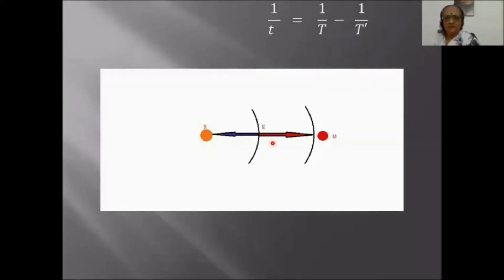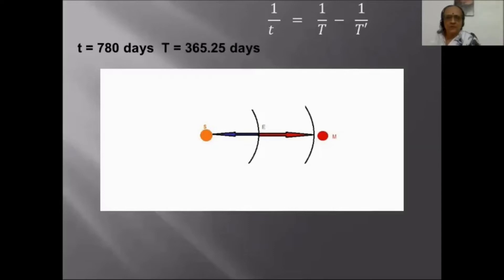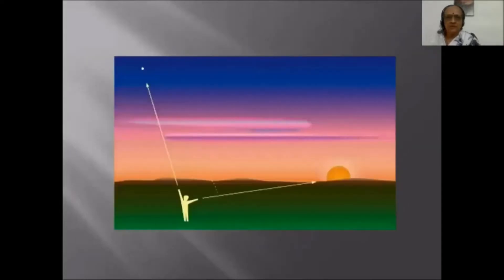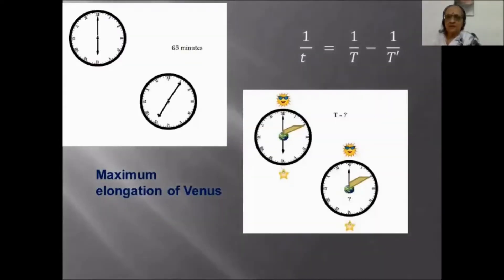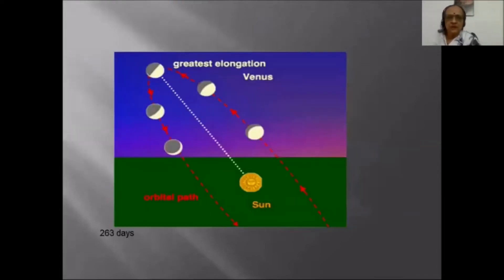For Mars, the opposition gives 1/T using 780 days and T equal to 365.25 days, so you can find T-dash, the orbital period of Mars. Similarly, measuring the angle and using the same periodicity idea gives the orbital period of Venus, and this also illustrates the meaning of the greatest elongation of Venus. You can also verify the orbital period by another independent method.